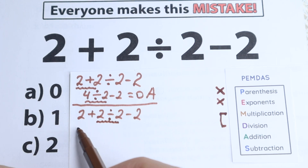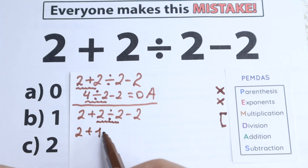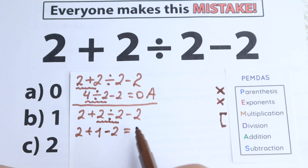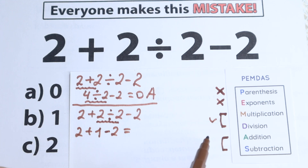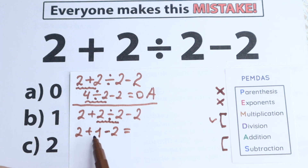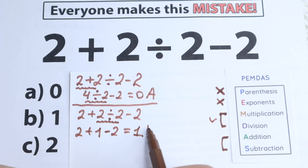We have 2 plus, and then the division gives us 2 divided by 2 equal to 1. So now we have 2 plus 1 minus 2. Addition and subtraction are the last step. In other words, we do multiplication and division before addition and subtraction. So 2 plus 1 equals 3, and 3 minus 2 equals 1. According to the correct order of operations — PEMDAS — the correct answer is option B.